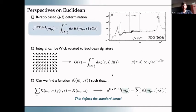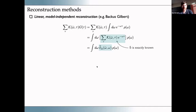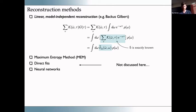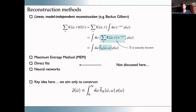This ties back to the idea we've emphasized: smearing out the spectral information in a smart way can give us interesting physics while circumventing or making the inverse problem mild. I focus on linear reconstruction methods — one plays with the freedom to design a kernel summed with your Euclidean correlator, which you can represent as a Laplace transform, and through straightforward steps you end up with a smearing of the underlying spectral function. We should always think of ourselves as targeting a smeared spectral function, since the true spectral function is a complicated distribution.